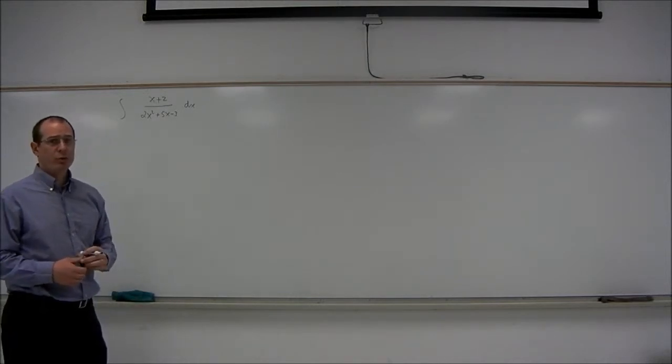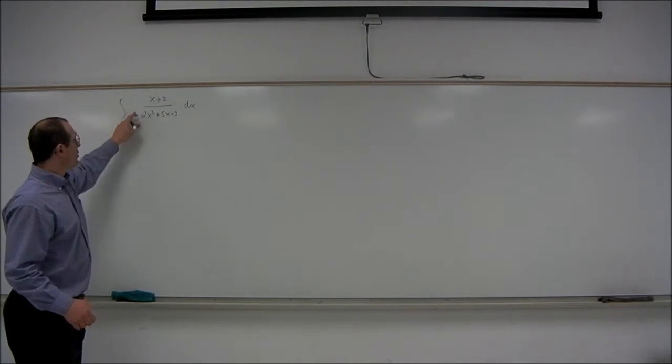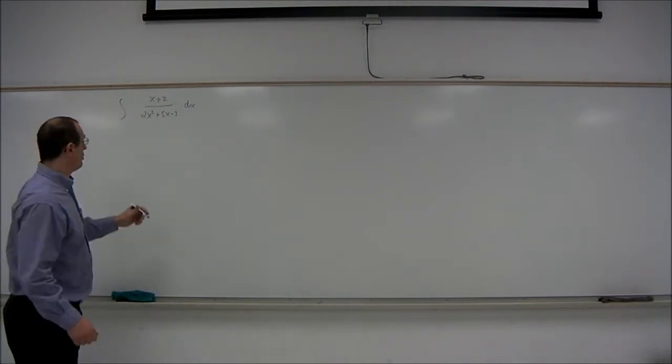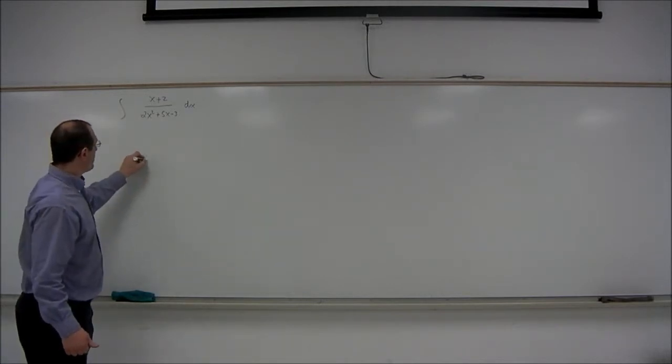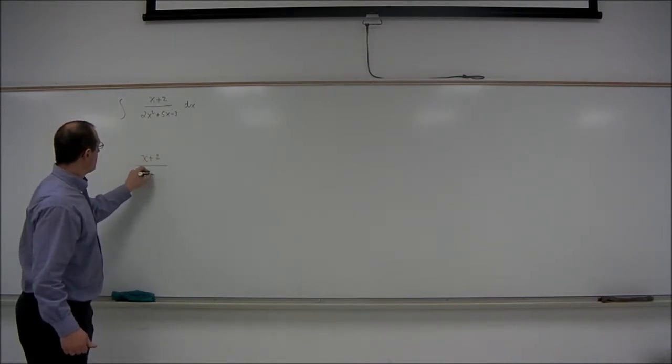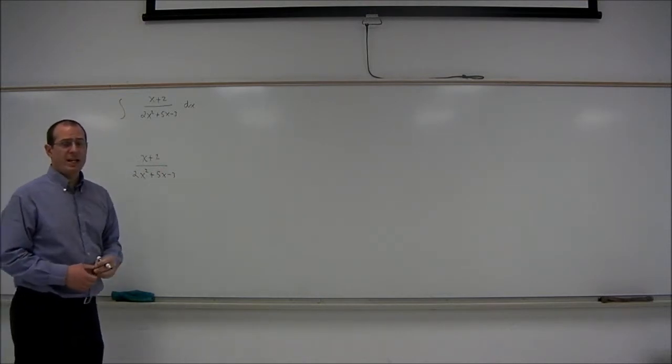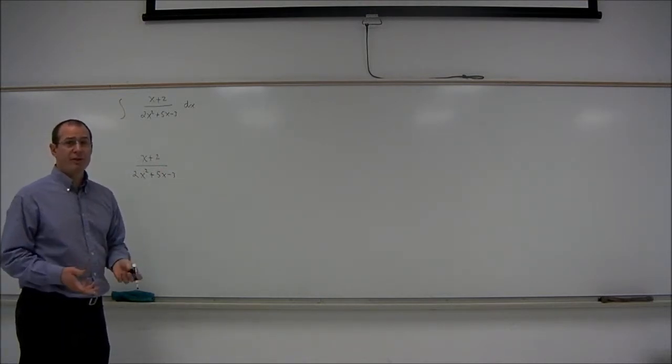The word rational comes from the root ratio, meaning ratio of polynomials. So in order to integrate this, what we're going to do is we're going to rewrite the fraction x plus 2 over 2x squared plus 5x minus 3. We're going to rewrite that as a sum of simpler fractions.